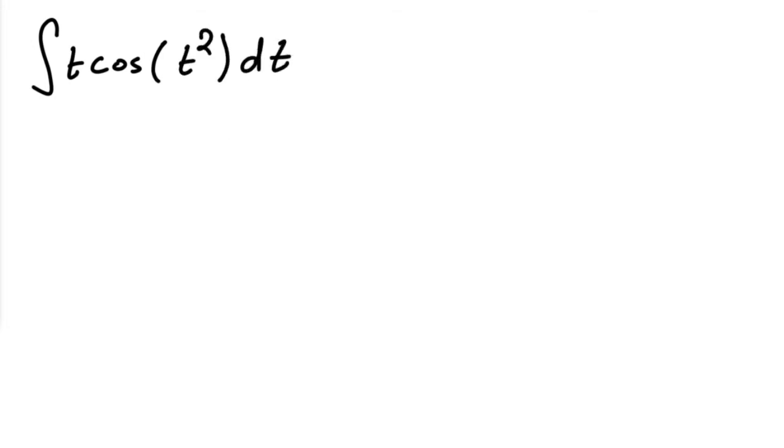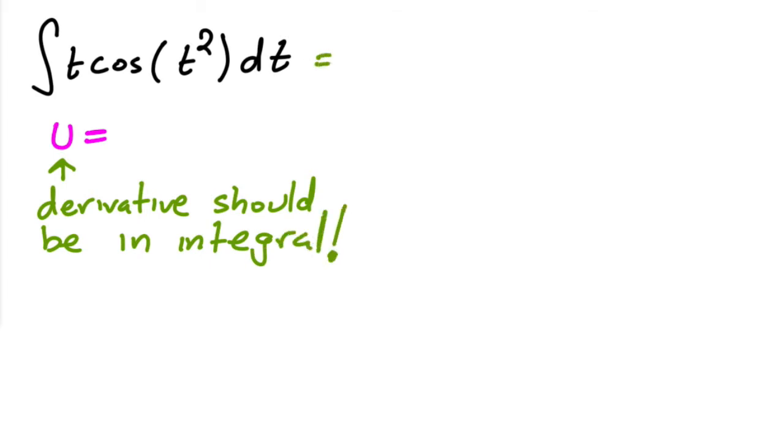Now let's do another one. Let's say we have the integral of t cosine of t squared dt. Now this is a classic integration by substitution. Because what you're basically looking for is that you want to pick your u so that the derivative of this u should be in the integral as well. That's your big key. Now it doesn't always work that way, but more often than not, that's what you're looking for. You're looking to pick u so that its derivative is inside of the integral.